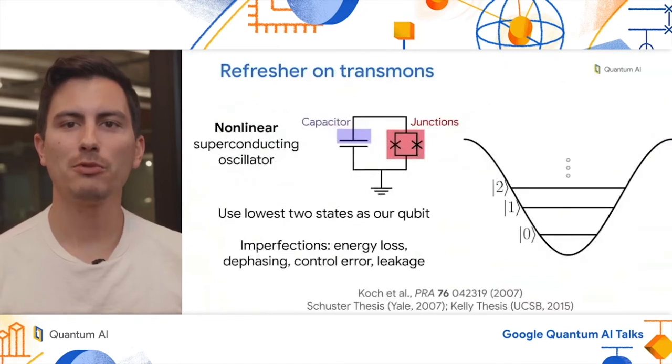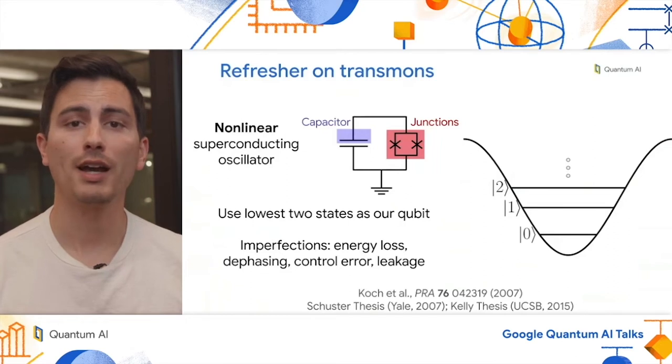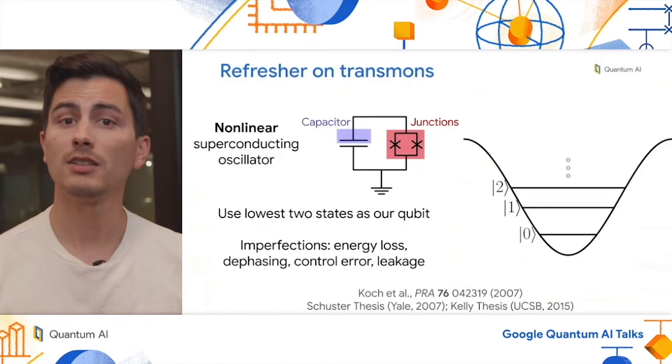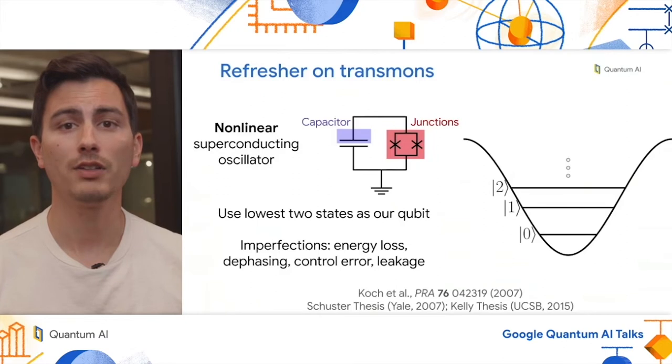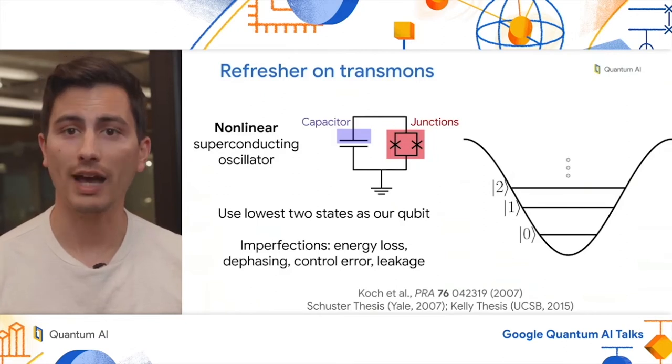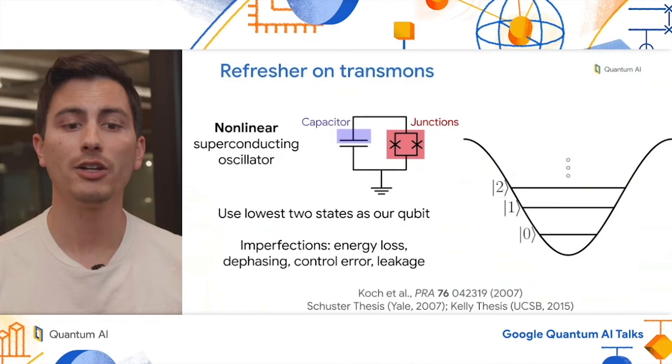Before we dive into system improvements, let me give you a refresh on transmon qubits. A transmon qubit is a nonlinear superconducting oscillator. It's formed by a capacitor in parallel with the DC squid, which is formed from two Josephson junctions. This DC squid gives a non-linearity to the circuit, which gives rise to uneven energy level spacings. We take advantage of this fact, and then we use the two lowest energy states as our qubit states, as shown on the right hand side in the cartoon. You can see the bottom two energy levels form the computational basis, zero and one. There are also higher energy states, such as two, which give rise to leakage processes.